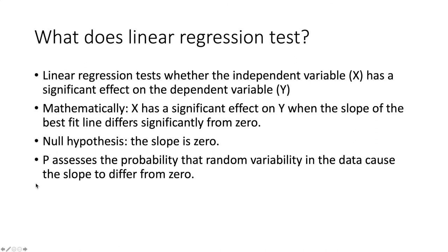When we run this test, as with other statistical tests, we derive a P-value. The P-value assesses the probability that random variability in the data is causing the slope to differ from zero, and not an effect that X has on Y.